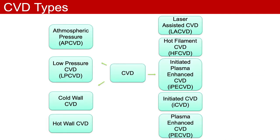There are many variants of CVD based on their reactor geometry, energy type and precursor type. For instance, CVD can be carried out under atmospheric conditions or in vacuum. Also, one can perform CVD either in a cold wall or in a hot wall reactor. Among the different types of CVD processes, plasma enhanced chemical vapor deposition or PE-CVD and initiated CVD, also known as ICVD, are the most widely used processes.